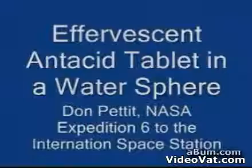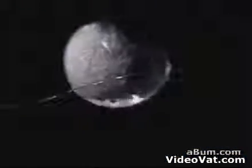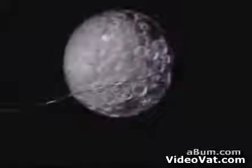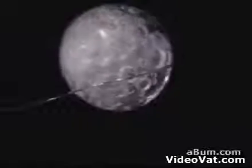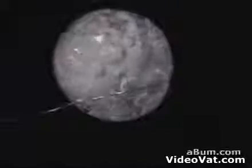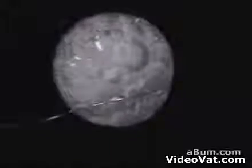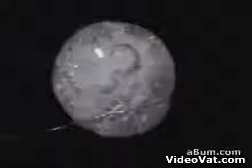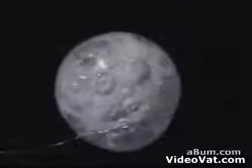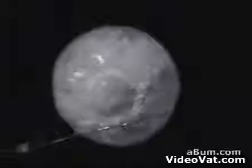Effervescent antacid tablet in a water sphere. Here's a sphere of water 50 millimeters in diameter with an effervescent antacid tablet. Bubbles form rapidly from a chemical reaction. This is an example of heterogeneous nucleation where bubbles form on a solid surface and can get a momentum exchange and travel out into the fluid.